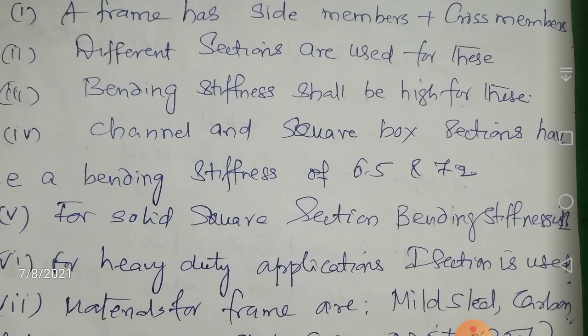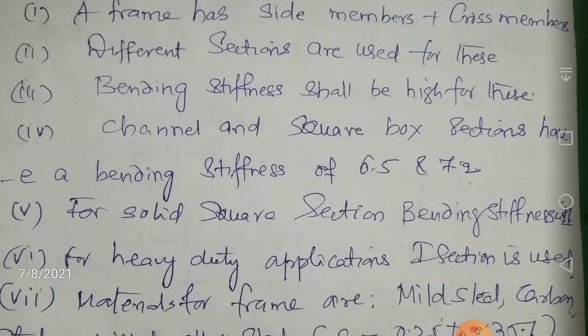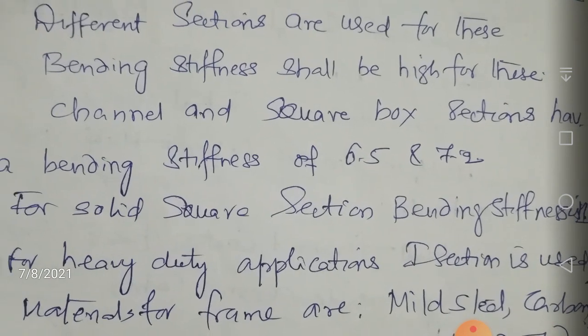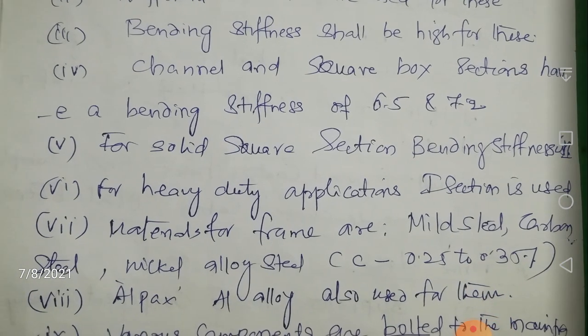Side members and cross members shall have high bending stiffness. From engineering mechanics or strength of materials, we know various structural section types. For this frame, channel section has a bending stiffness of 6.5 and square box section has a bending stiffness of 7.2. Stiffness is defined as load per unit deflection — so bending stiffness is the bending load per unit deflection under bending loading.